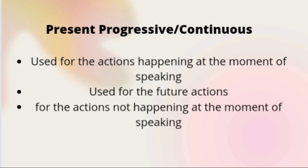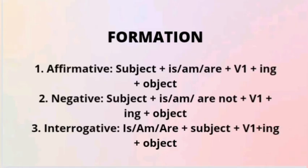The next tense is present progressive or continuous. This tense is used for actions happening at the moment of speaking — for example, look, it is raining outside; listen, the train is whistling. It is also used for future actions — for example, we are holding a function on Monday, they are leaving for New Delhi on Wednesday. Sometimes this tense is used for actions which are not happening at the moment of speaking — for example, all the trains are coming late due to fog.